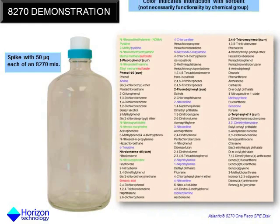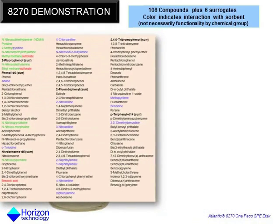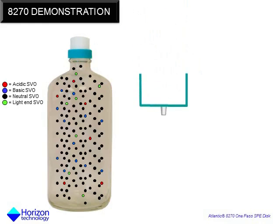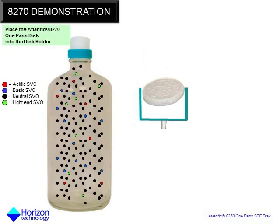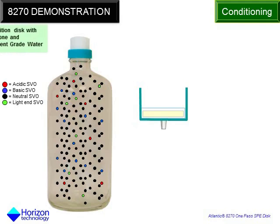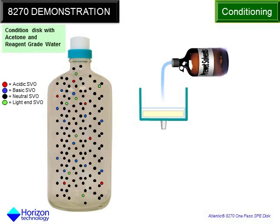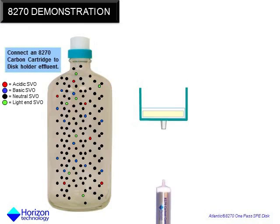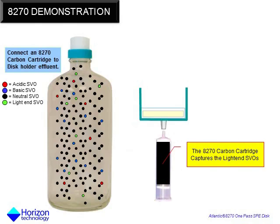108 compounds plus 6 surrogates are spiked into the water at 50 microgram concentrations. The red dots represent acids, blue dots represent bases, neutrals are shown as black dots, and light-end compounds by bright green. The Atlantic 8270 one-pass disc is placed into the disc holder, and the disc is conditioned with acetone followed by reagent-grade water.